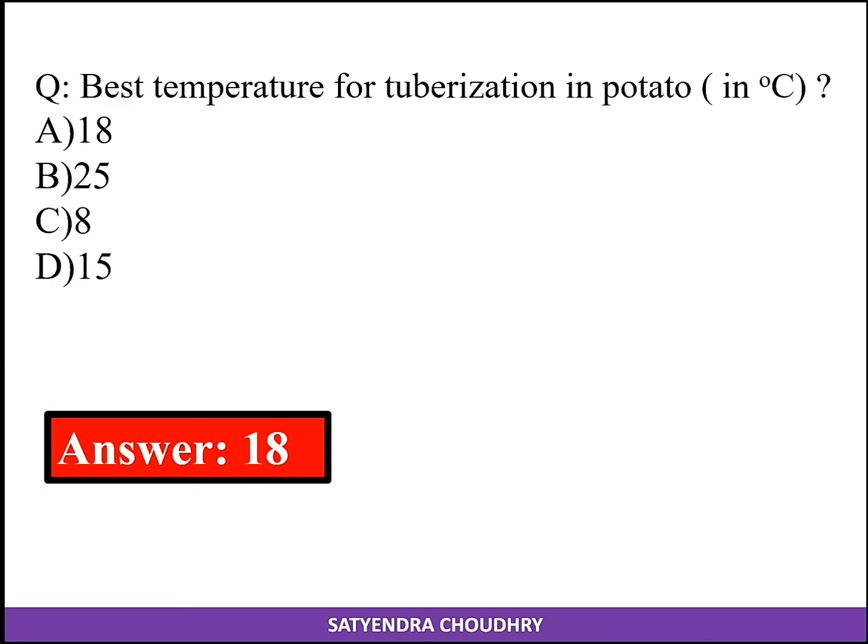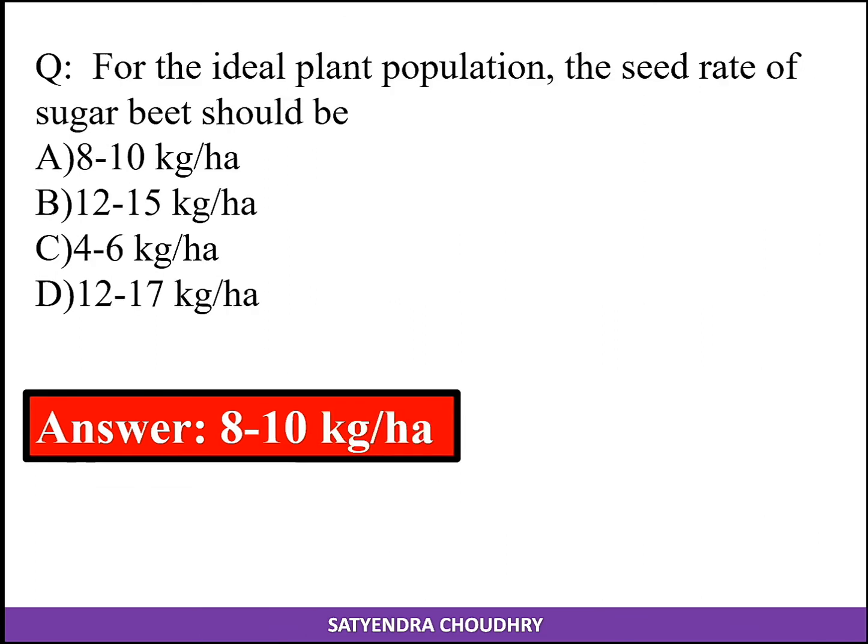The best temperature for tuberization in potatoes is 18 degrees Celsius. For the ideal plant population, the seed rate of sugar beet should be 8 to 10 kg per hectare.